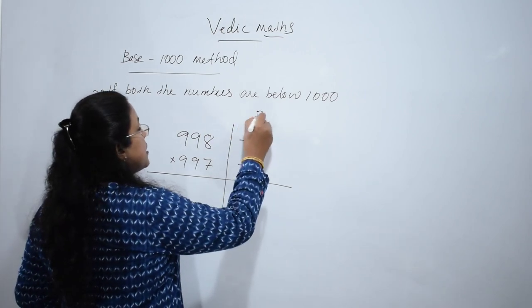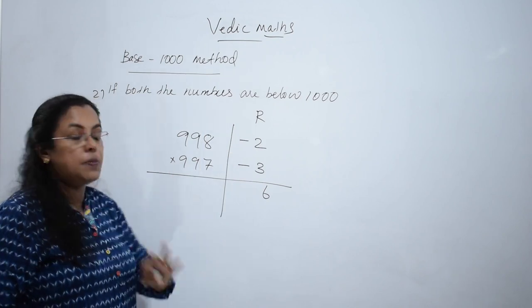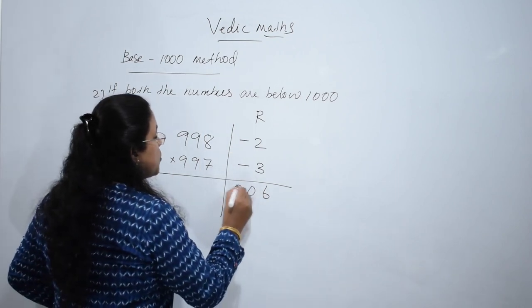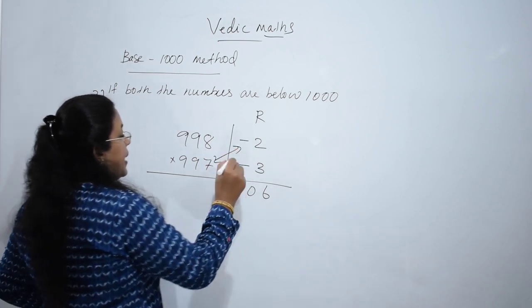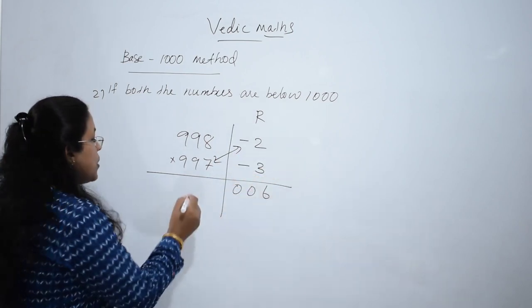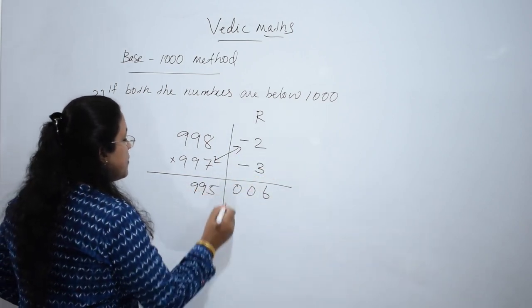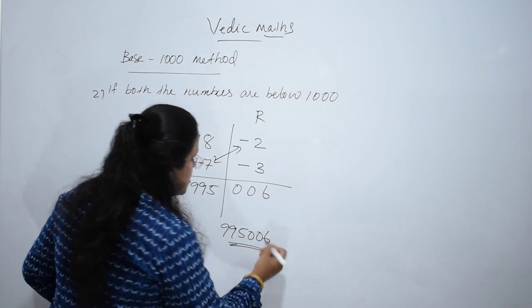Multiply the two: 3 twos are 6. Since it is base 1000 method, there must be 3 places, so put 2 zeros. Now add diagonally: 997 minus 2 is 995. So the final answer is 995006.